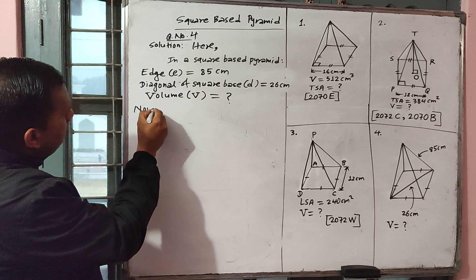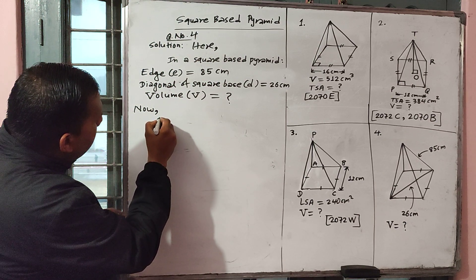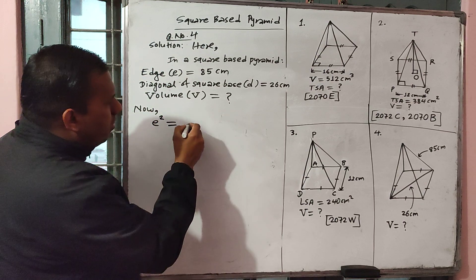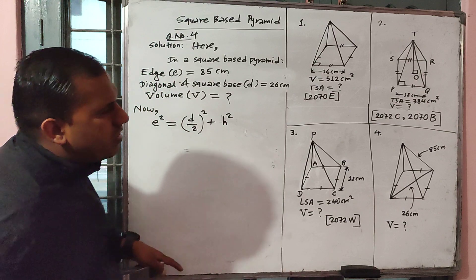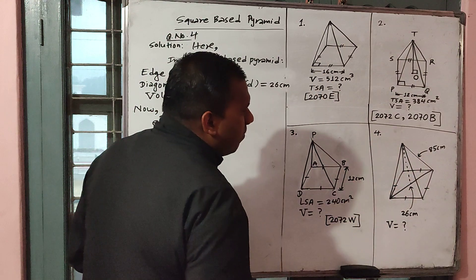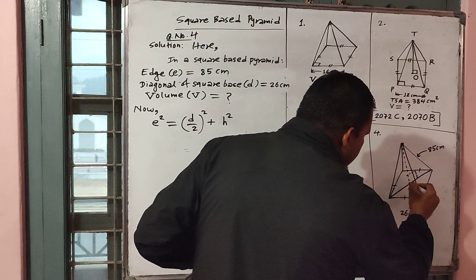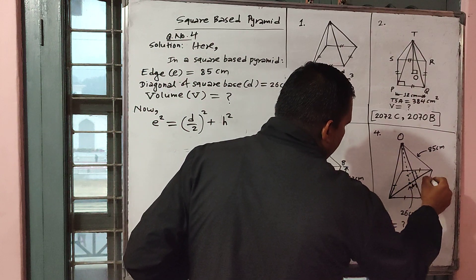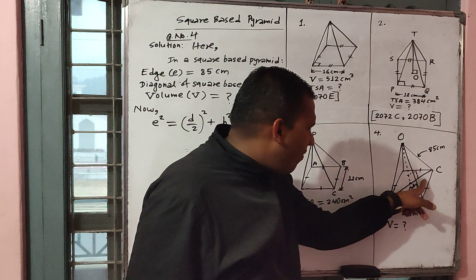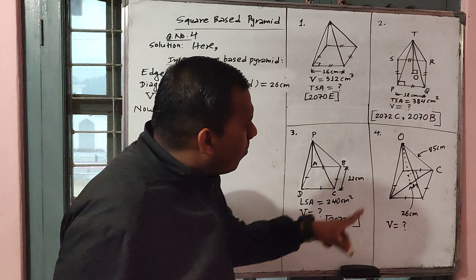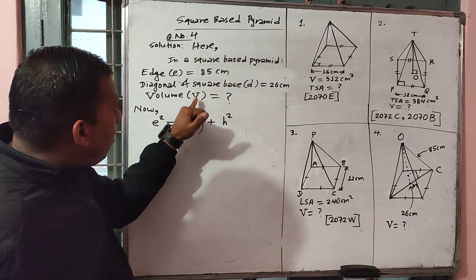Now, looking at the pyramid from the top, we get a right angle triangle O-M-C. By using the Pythagoras theorem, E becomes the hypotenuse, half of the diagonal becomes the base, and the vertical height is the other side. So by Pythagoras theorem: E squared equals (diagonal/2) squared plus vertical height squared. We have given that E is 85, so 85 squared equals (26/2) squared plus H squared.